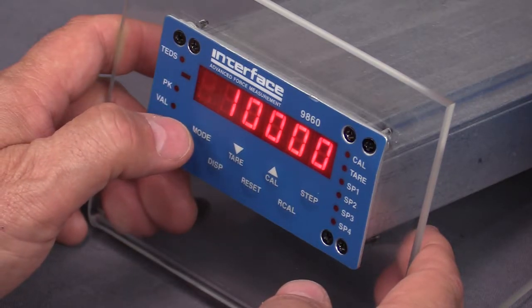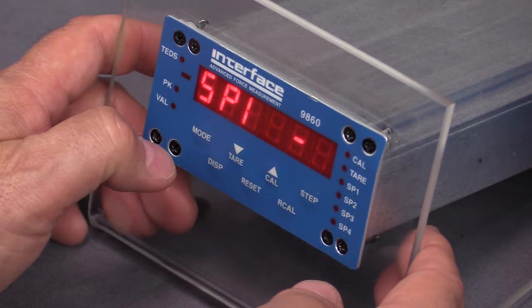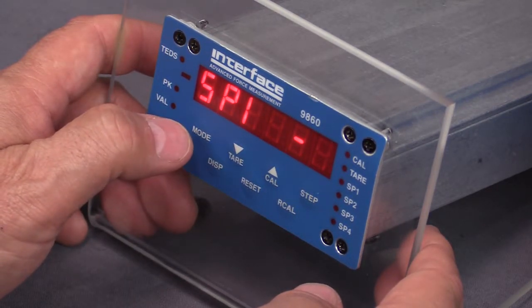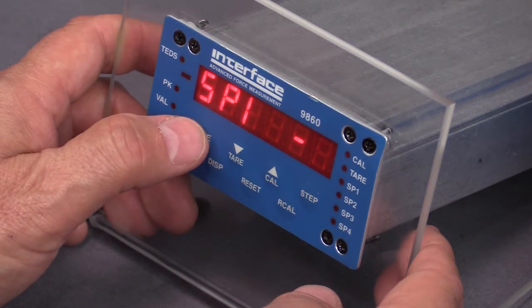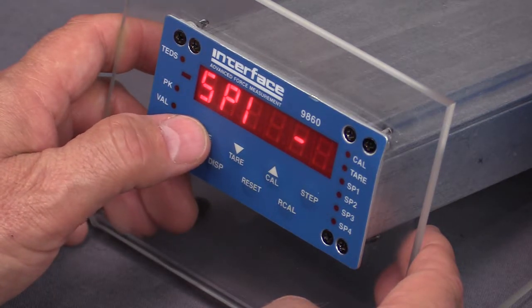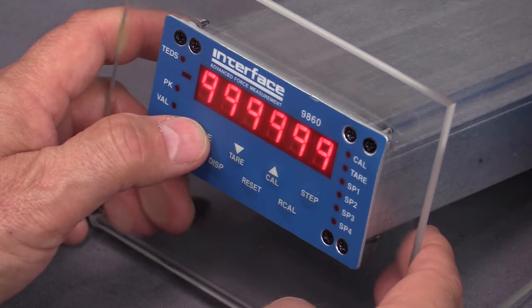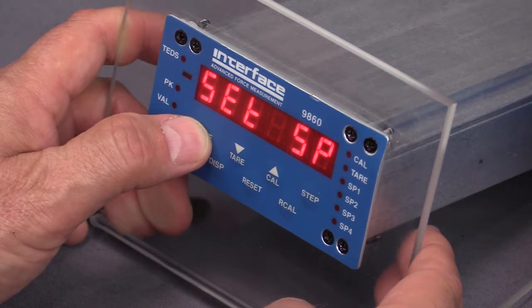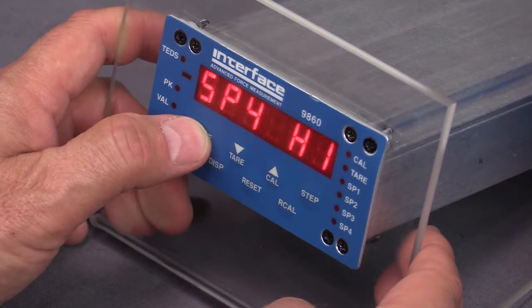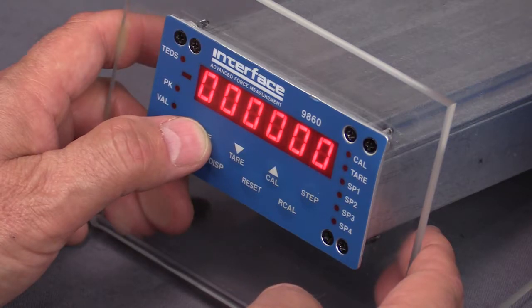Hit the mode button again. Now these are for a series of different set points. We're not going to go through that right now, but this indicator has open collectors so it can trigger relays based on whatever value is set inside of this indicator. So again, you can read the manual to set these if you need them. I'm just going to keep advancing all the way through. There's four different set points, then there'll be a hysteresis value which again has to do with set points.